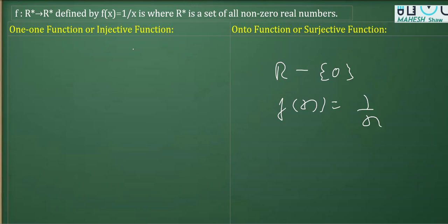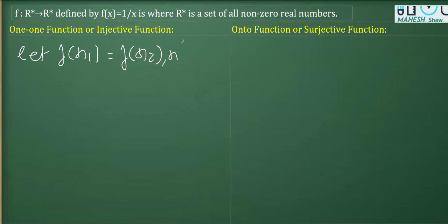Now for the function to be one-to-one, also known as injective, we will say let f(x1) equals f(x2), where x1 and x2 belong to R*.